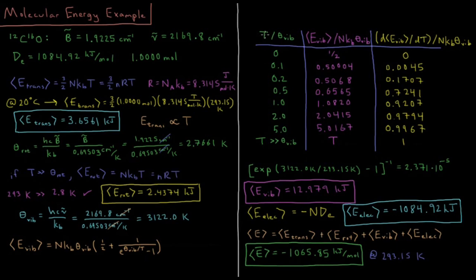Looking at a table of values: temperature in units of θ_vib versus vibrational energy divided by NK·θ_vib. At 0 Kelvin, the exponential term is 0 and we just have 1/2 NK·θ_vib. At 0.1 θ_vib we get 0.5004, with almost no change with temperature. At 0.2 we get 0.5068. At 0.5 we start getting some contribution: 0.6565 NK·θ_vib. At T = θ_vib we get 1.0820, a significant amount of vibrational energy. Then it approaches a linear increase as temperature rises.